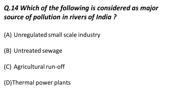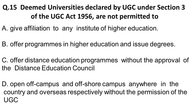Next question: which of the following is considered a major source of pollution in rivers of India? Options are unregulated small-scale industry, untreated sewage, agricultural runoff, and thermal power plants. The correct answer is untreated sewage, which is the major source of pollution in rivers of India.